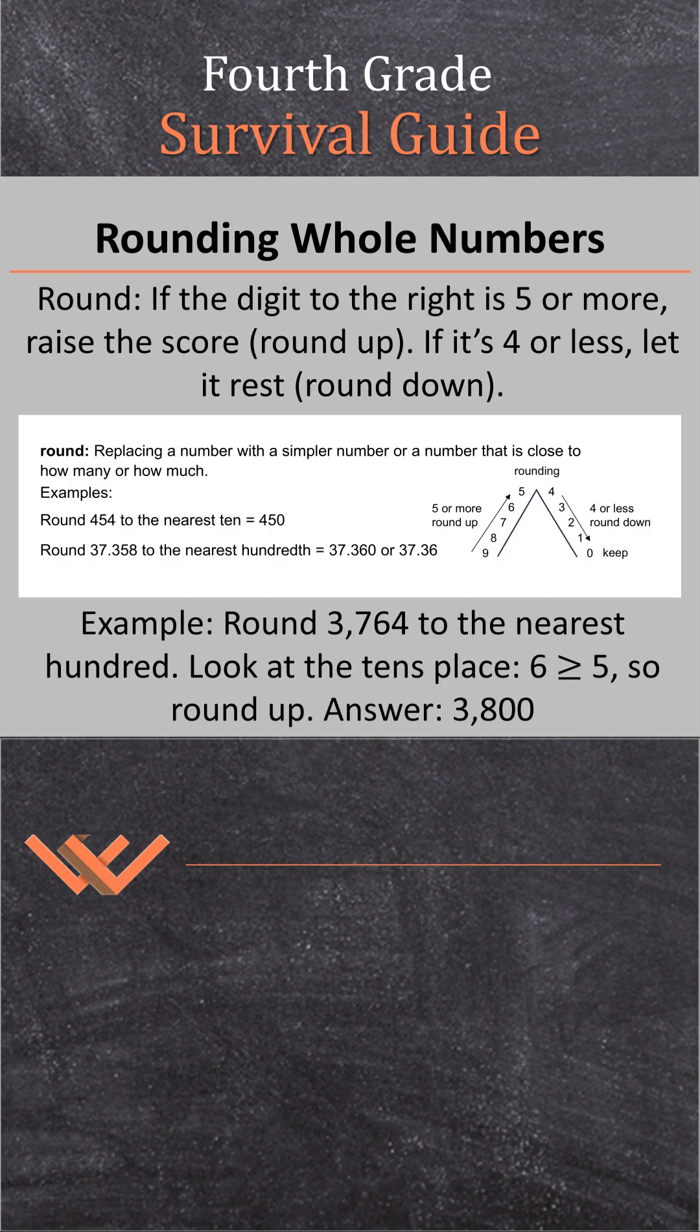Let's continue. Here's what you need to remember for when you're rounding numbers. If the digit to the right is five or more, raise the score, or round up. If it's four or less, let it rest, or round down.